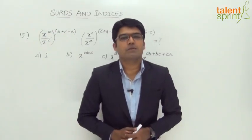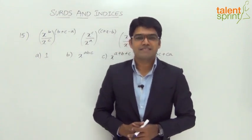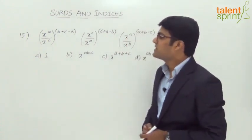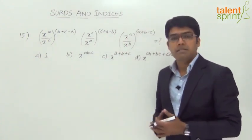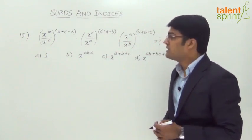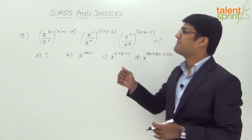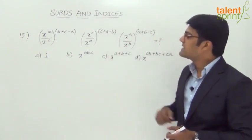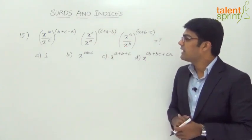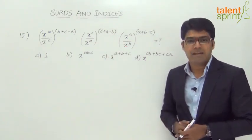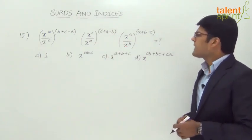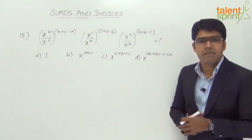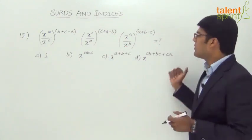Let us take one last question from this topic of surds and indices. The given question is: x^b divided by x^c, whole to the power of (b+c−a), multiplied by x^c divided by x^a, whole to the power of (c+a−b), multiplied by x^a divided by x^b, whole to the power of (a+b−c). What does this equal?